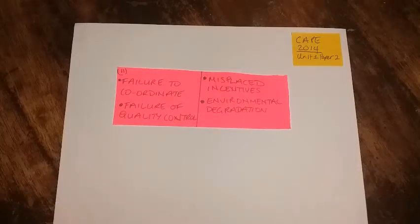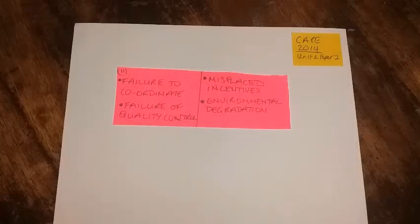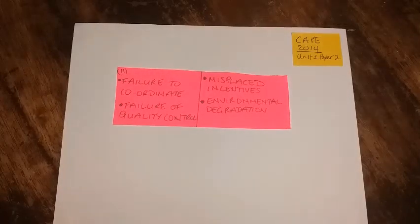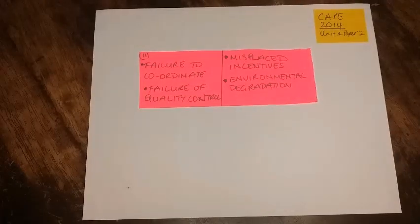For failure of quality control: in command economies the state could control what goods were to be produced and in what quantities, but it was difficult to monitor the quality of those goods. This resulted in factories just trying to meet quotas without concern for quality, leading to a lot of poor quality goods. For misplaced incentives: workers in command economies had job security, but while this may have been attractive to some, it didn't provide the incentive needed for persons to work hard and efficiently.